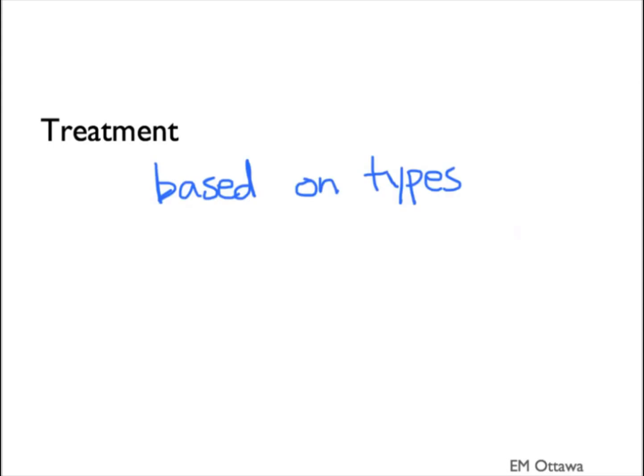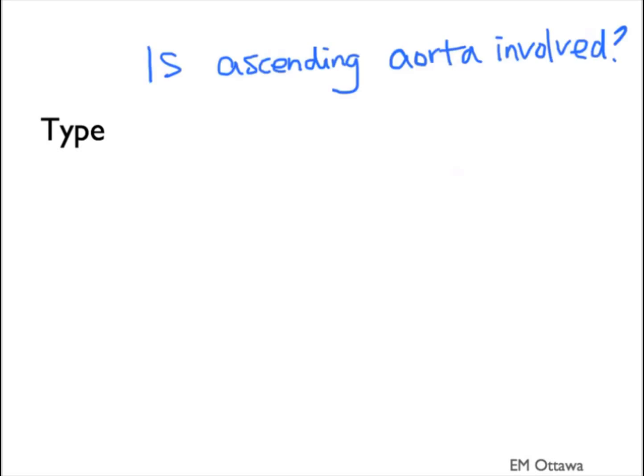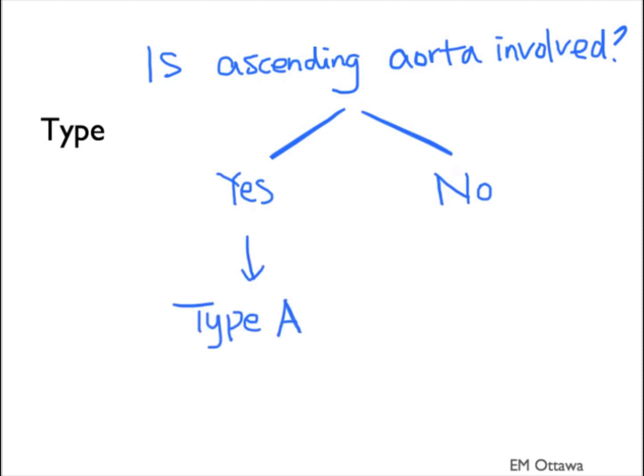Once we diagnose an aortic dissection, what should be the treatment? The treatment is based on the type of dissection. There are different classifications, but we will use this one for our discussion. It is based on whether the ascending aorta is involved. If it is, it is a type A dissection, and if it is not, type B.